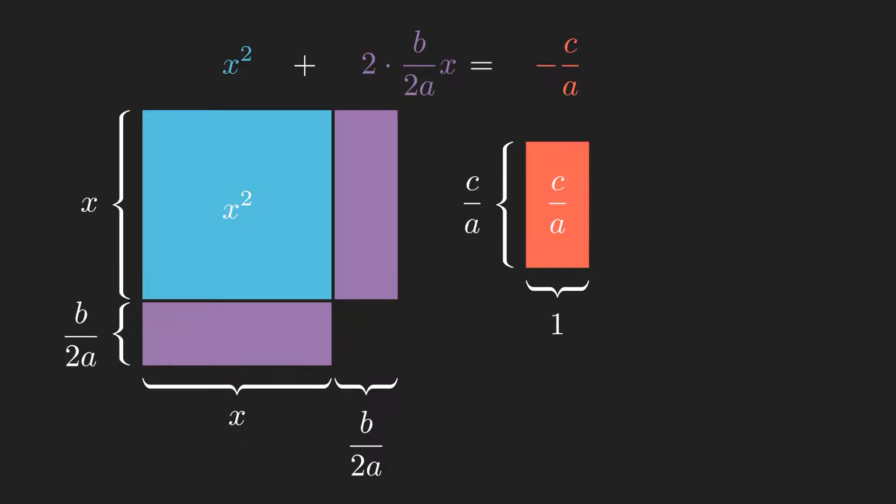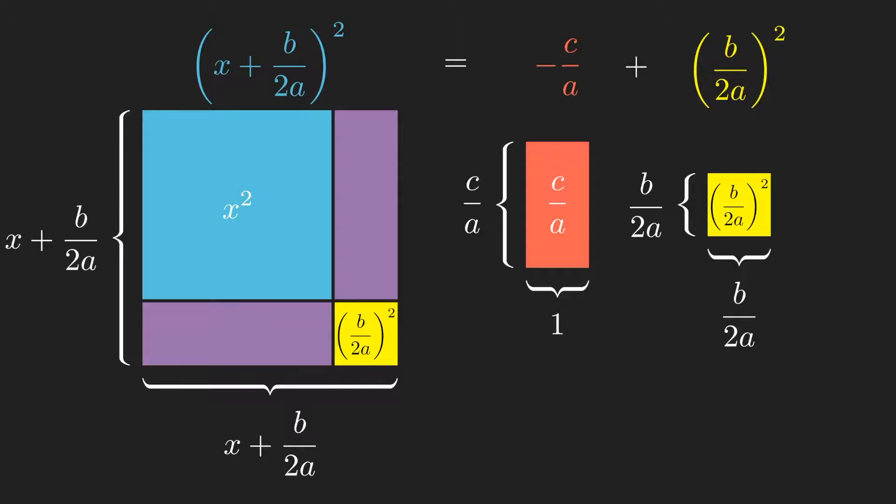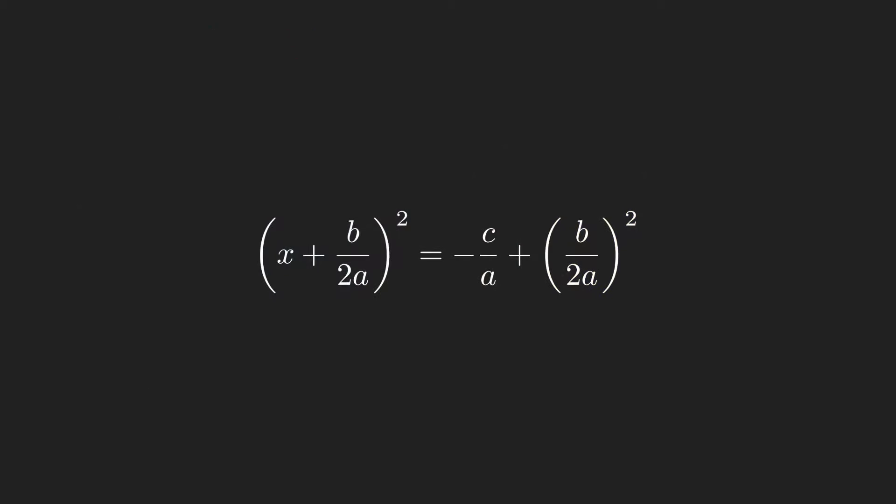If we wish to complete the square, we can add b over 2a all squared to each side of the equation to keep it balanced. This gives us a new formula, where the left hand side is a square. We can start to simplify this. And we can see now after our simplification that the quadratic formula drops out.